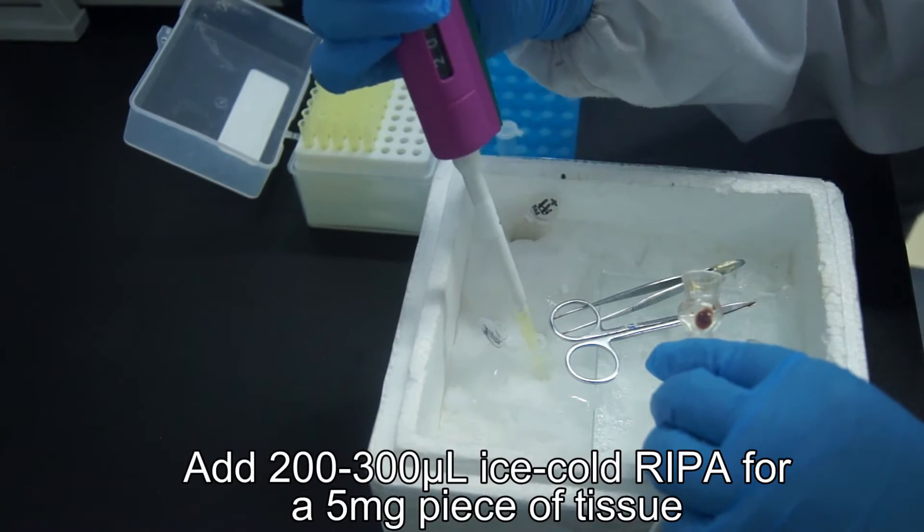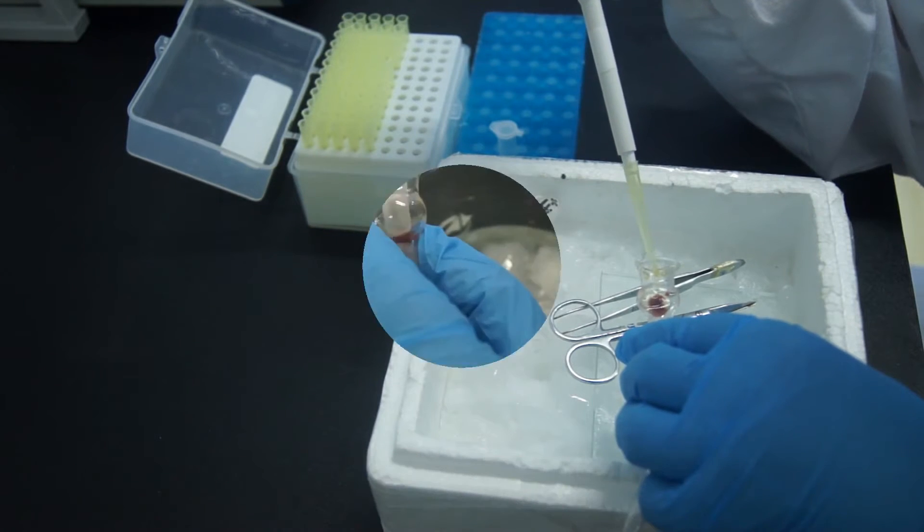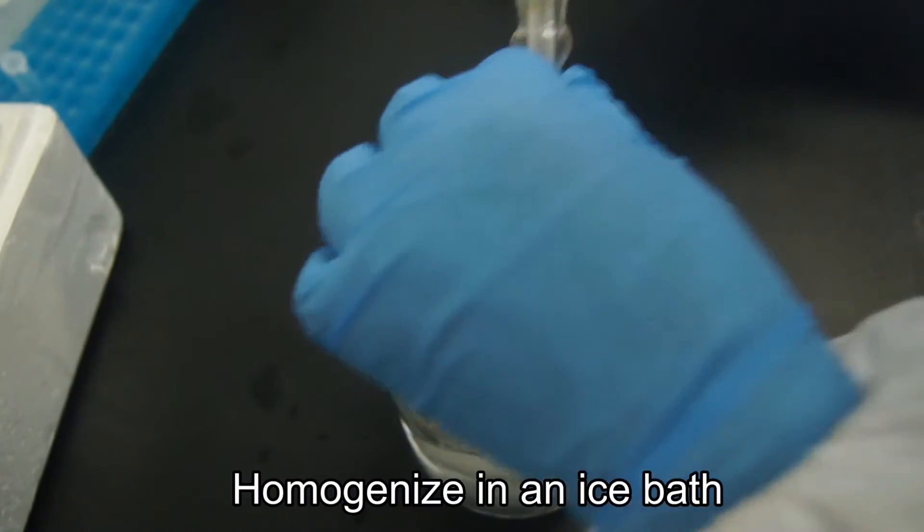Add 200 to 300 microliters of ice-cold REAPER lysis buffer for about 5 mg of tissue samples and homogenize on ice.